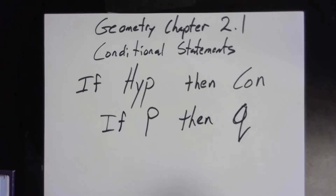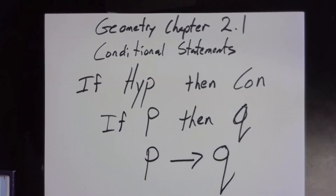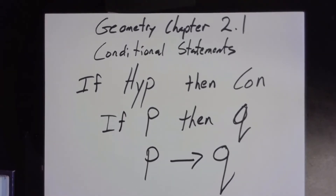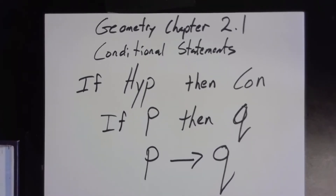We're even lazier than that — we just write P → Q, meaning this hypothesis leads to this particular conclusion. For example: if you are in Houston, then you are in Texas. Or: if it is fourth period, then you are in math.